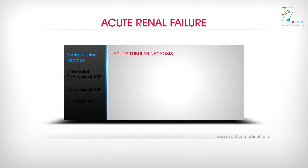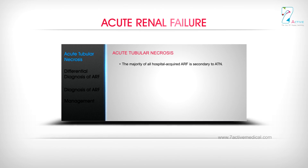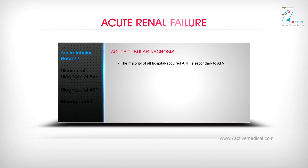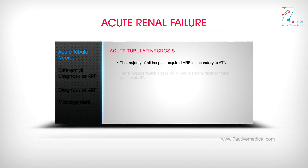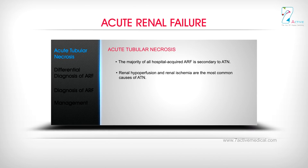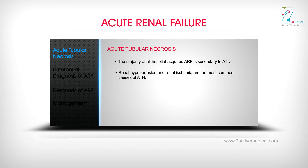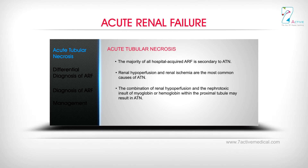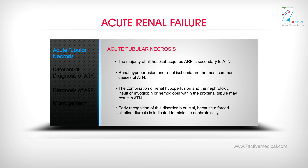Acute Tubular Necrosis (ATN): The majority of all hospital-acquired ARF is secondary to ATN. Renal hypoperfusion and renal ischemia are the most common causes of ATN. The combination of renal hypoperfusion and the nephrotoxic insult of myoglobin or hemoglobin within the proximal tubule may result in ATN. Early recognition is crucial because a forced alkaline diuresis is indicated to minimize nephrotoxicity.